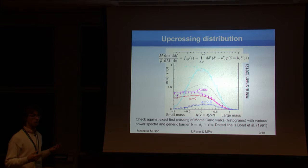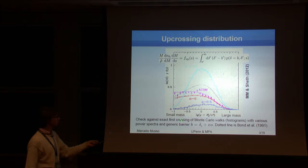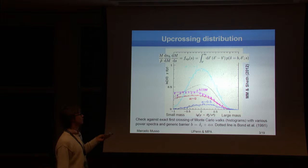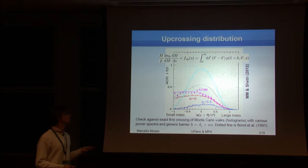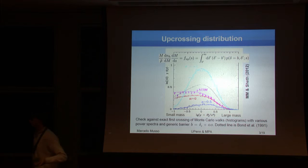So there is a thing that you can do. I said that computing the first crossing probability is hard, but computing the up-crossing distribution is actually very easy, because now the walks are smooth, so talking about the derivative, the slope of the walk, is something that is statistically well-defined.